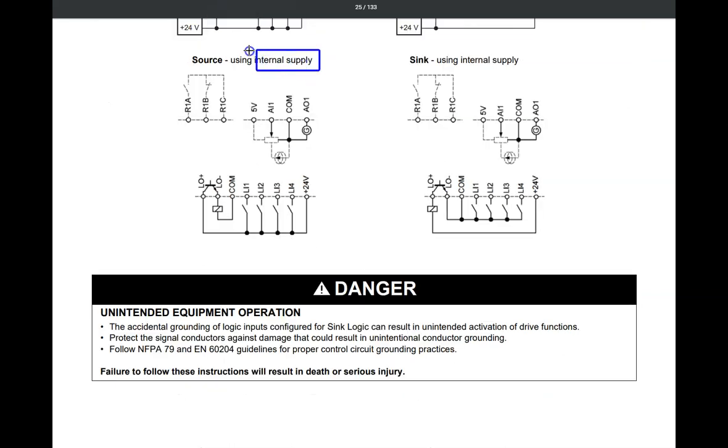If you want to just use the internal power supply that comes with the drive for a local application and you want to use source wiring, you use this diagram for your logic inputs. You take plus 24, you connect to one side of the switch or switches. And when you close the switch, you have 24 volts at that input. And that is a high or run command. You will have to check to make sure that your parameter is set to recognize that.